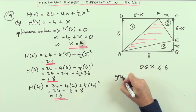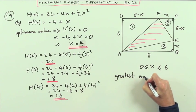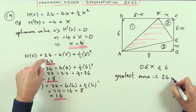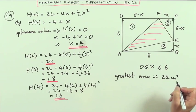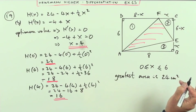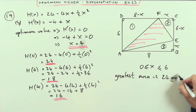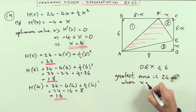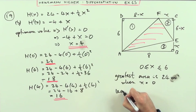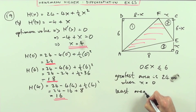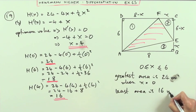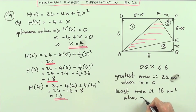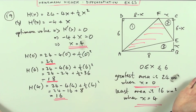Find the greatest and least possible values of the area. So using greatest and least. So greatest area is 24, unit squared when x equals 0. Least area is 16, unit squared when x equals 4. And that would be it. That's question 19.